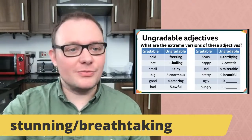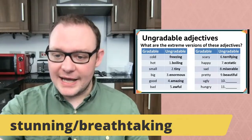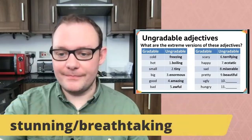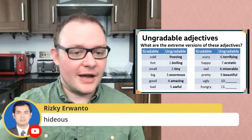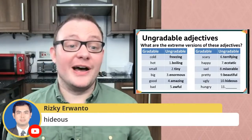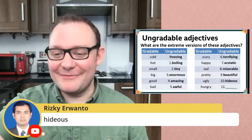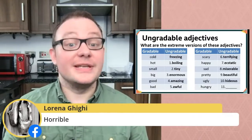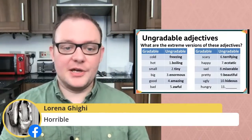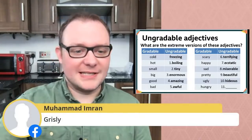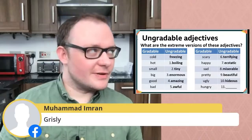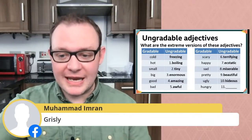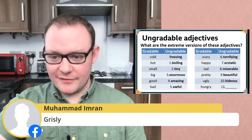For number ten, the extreme of 'ugly,' Risky says 'hideous' — that's the one I went with too! Great minds think alike. We also have 'horrible' from Lorena — yes, we can use horrible to describe how something looks. And 'grizzly' — now I'd say that's more of a gradable adjective. For number eleven, the extreme form of 'hungry,' the answer is 'starving.' I also had one other word: 'ravenous' — I'm ravenous! I haven't had my lunch yet.